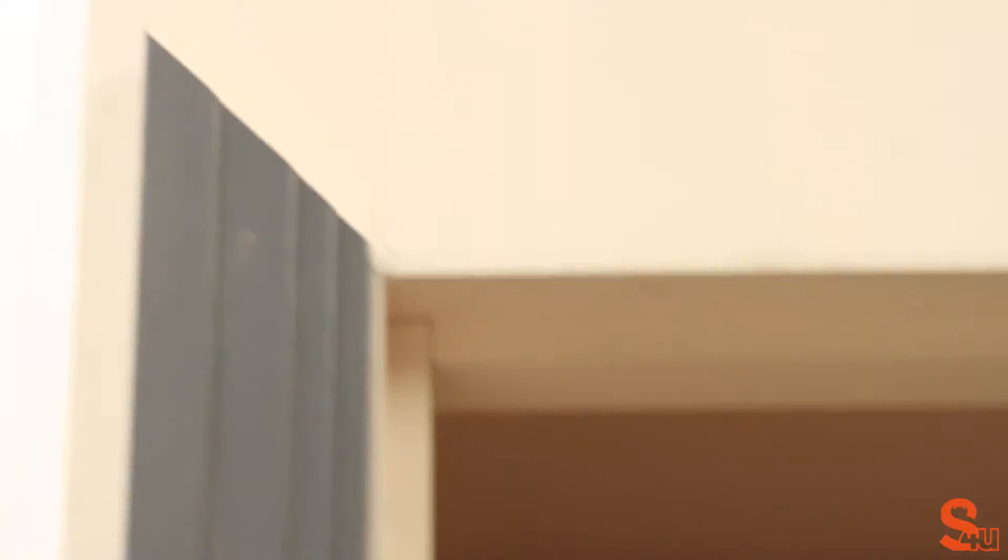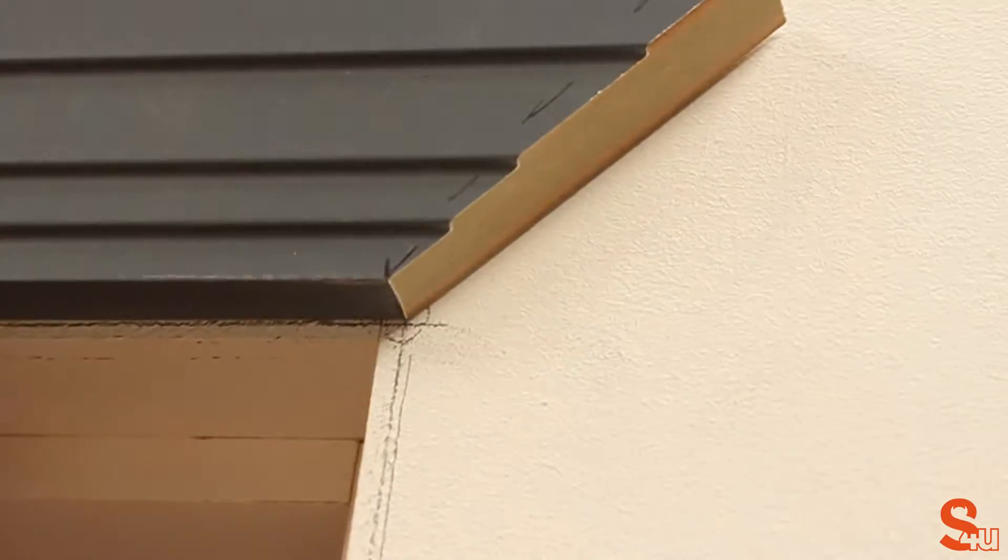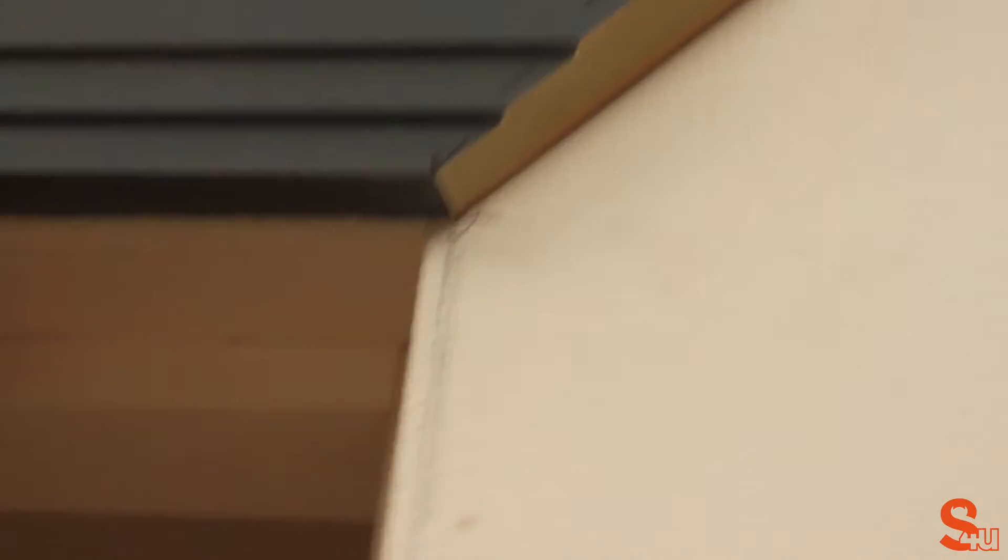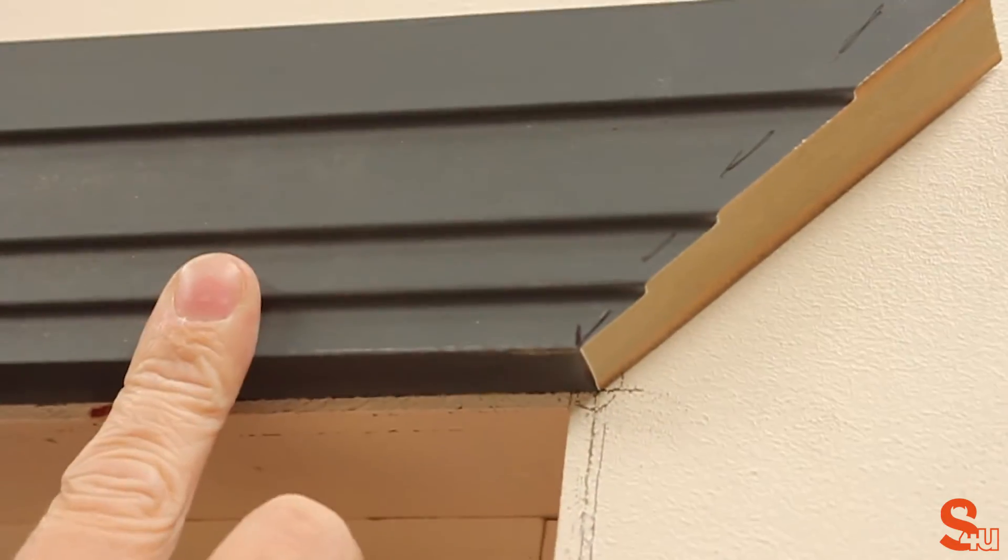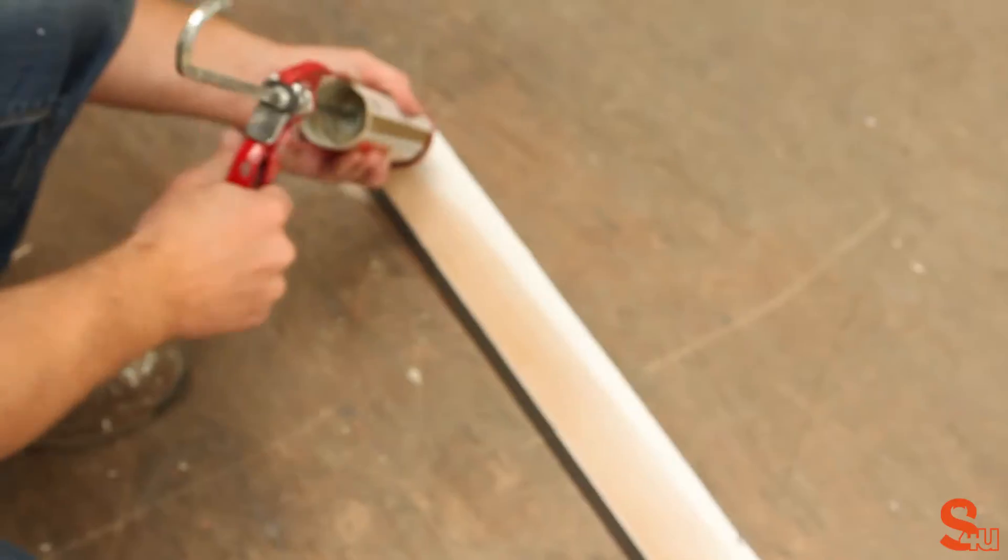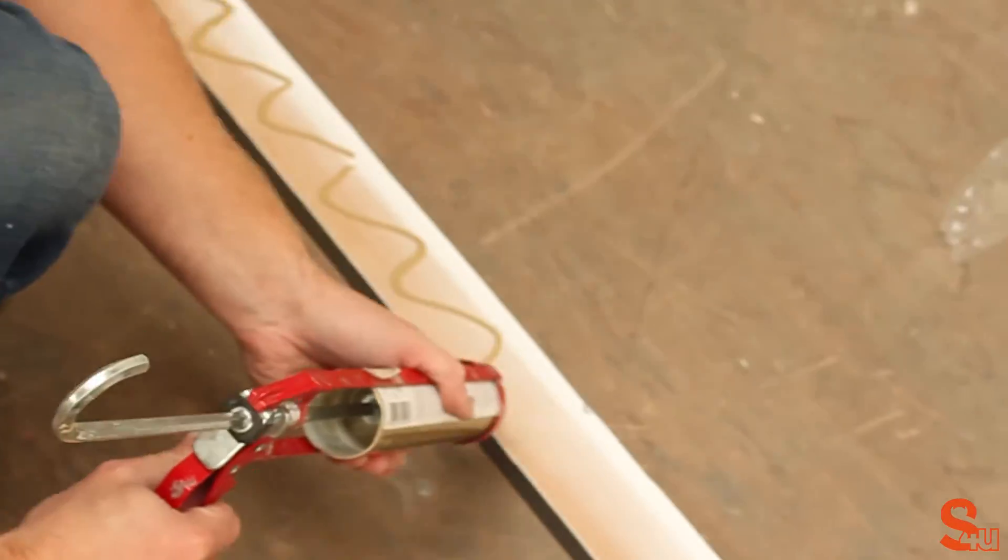Then we put our head piece back on the wall to check that it lines up correctly and it matches with our intersect point. As you can see, it's bang-on in the middle. So we can now apply some adhesive, again with squiggly lines, and pin that to the wall.